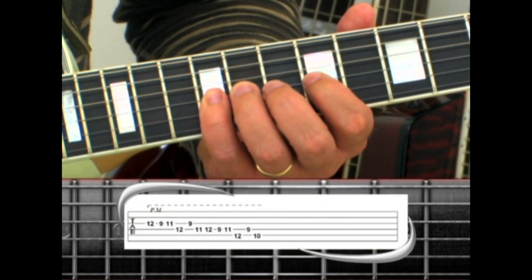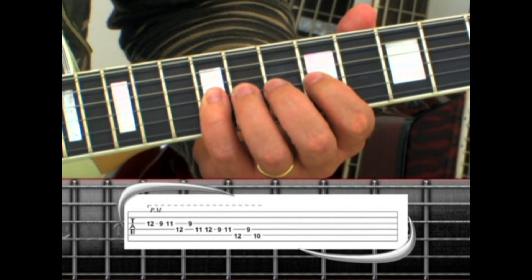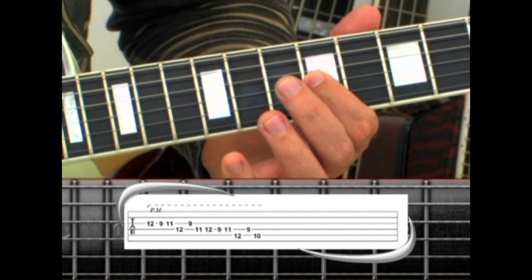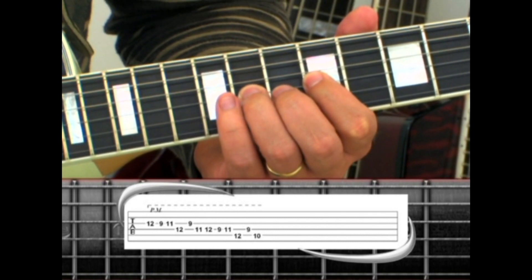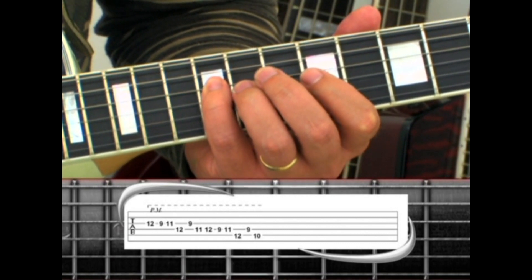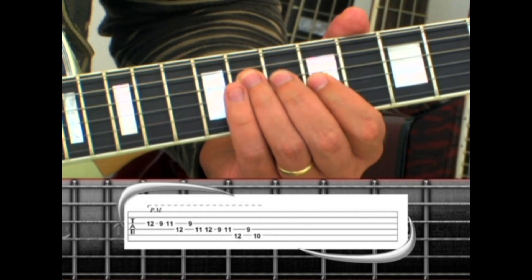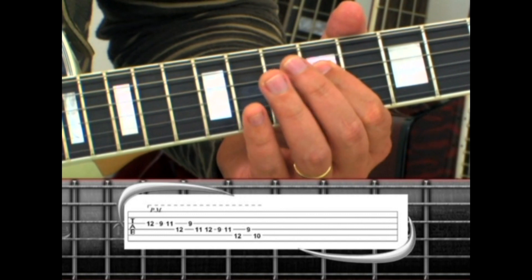There is also a palm muted guitar riff played over phrase 5. On the third string, play the 12th fret with your pinky, 9 with your index, 11 with your ring. Switch to the fourth string 12, back to third string 9, fourth string 11, 12, 9, 11.